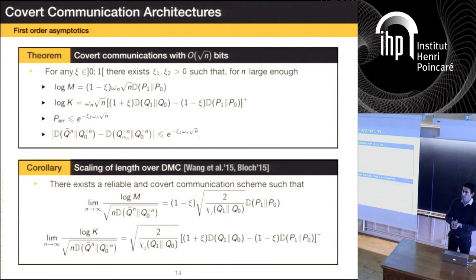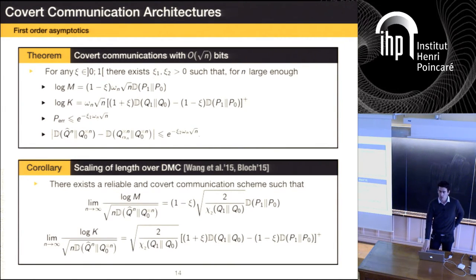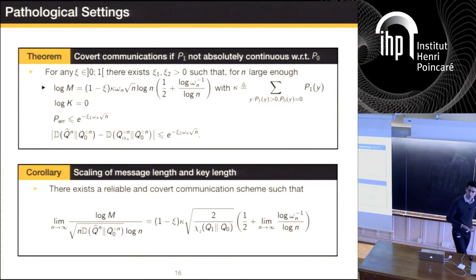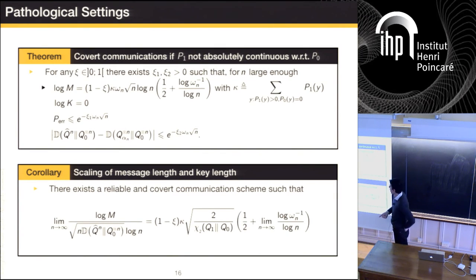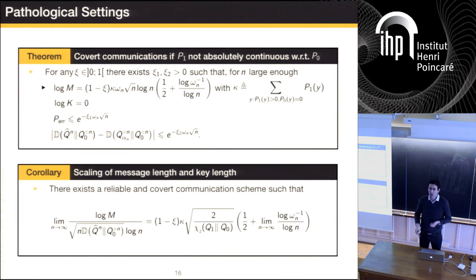What about the case when P1 is not absolutely continuous with respect to P0? We can still derive results, but in that case you never need a key, and the scaling is different — instead of √N it's √N · log N. Think about the main channel as an erasure channel: there's one symbol never observed by the warden, giving you an advantage that translates into a different scaling. In many ways this looks like a wiretap channel, but the constraints force us to operate below the linear regime — there's no rate, it's zero rate — and some funny things happen every once in a while.